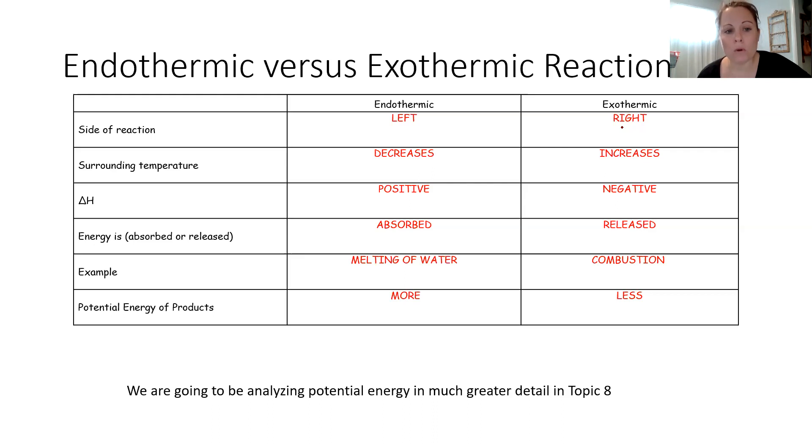Delta H is a value that we're going to actually calculate later in topic eight. But the delta H just represents the difference in potential energy from beginning to end. So it's positive because we are absorbing energy. And an example of an endothermic reaction from the review book is the melting of water. There is more energy in the products than there is in the reactants. And that's going to come back again in topic eight where we take our potential energy of our products minus the reactants to get a delta H value. That is where that positive value comes from. But again, we don't need to calculate that yet.